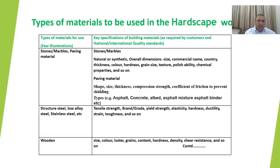For paving materials, the designer has to specify the shape, size, thickness, compression strength, and the coefficient of friction to prevent skidding, along with the types of paving materials. For external features made out of steel — which can be circular steel, low-alloyed steel, or stainless steel, such as railings — the important characteristics are tensile strength, brand grade, yield strength, elasticity, hardness, ductility, strain, and toughness.